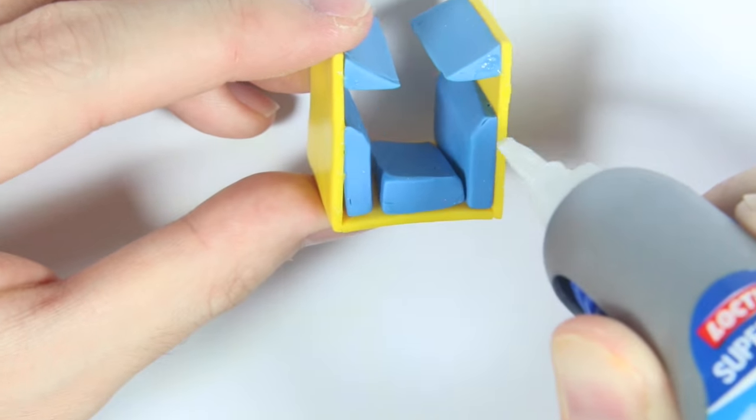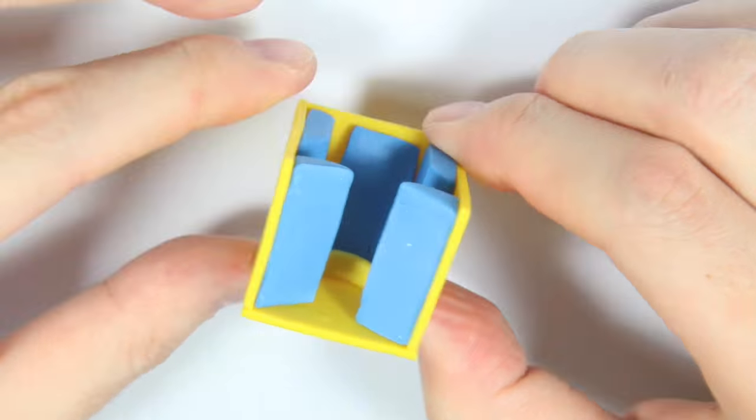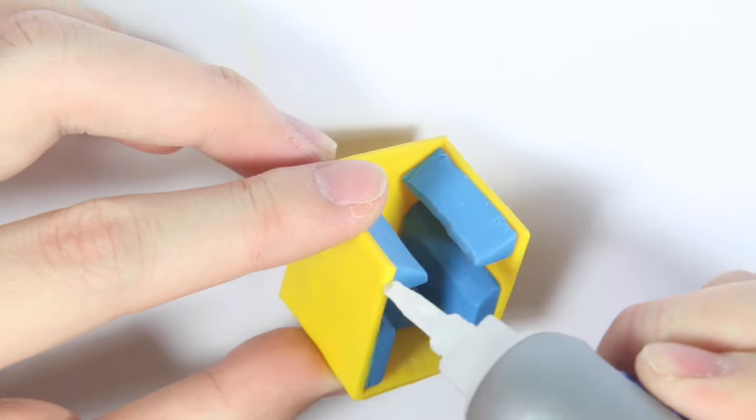Then I'm gluing on the back side making sure that the little circle hole place is on the inside. Then I'm gluing on the front side.